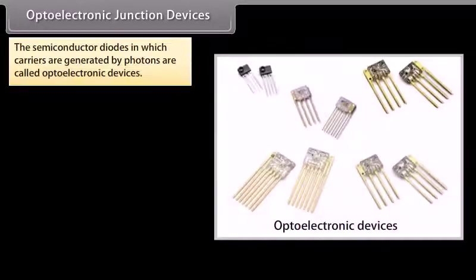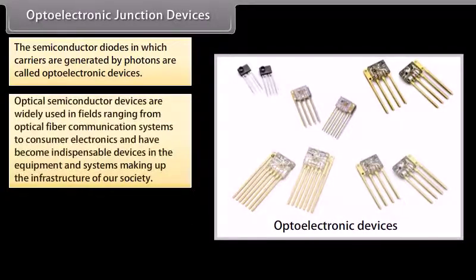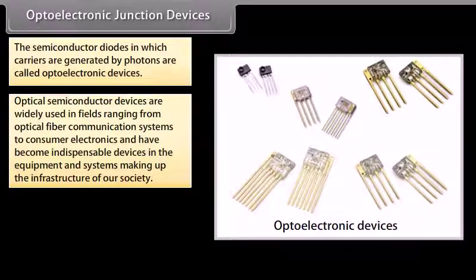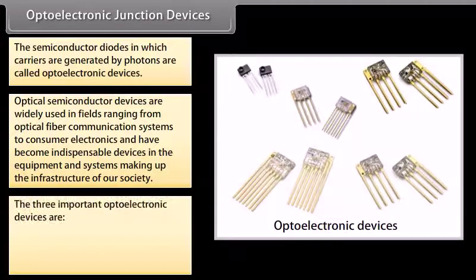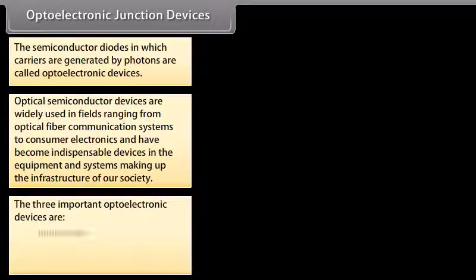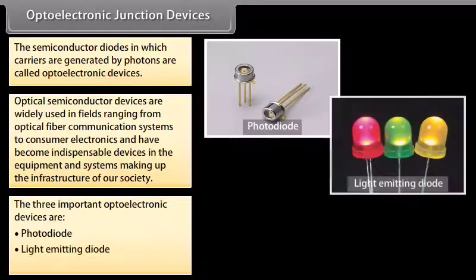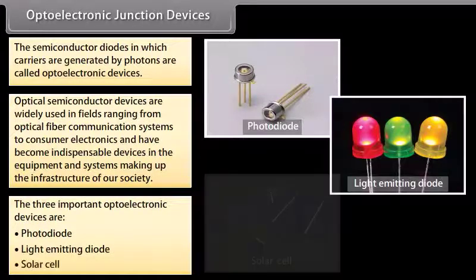Optoelectronic junction devices: The semiconductor diodes in which carriers are generated by photons are called optoelectronic devices. Optical semiconductor devices are widely used in fields ranging from optical fiber communication systems to consumer electronics, and have become indispensable in modern infrastructure. The three important optoelectronic devices are photodiode, light emitting diode, and solar cell.